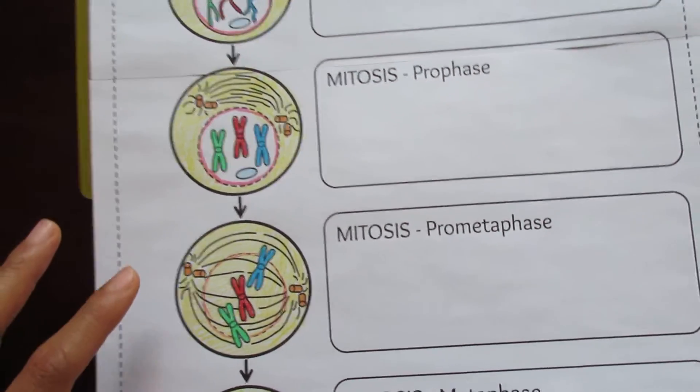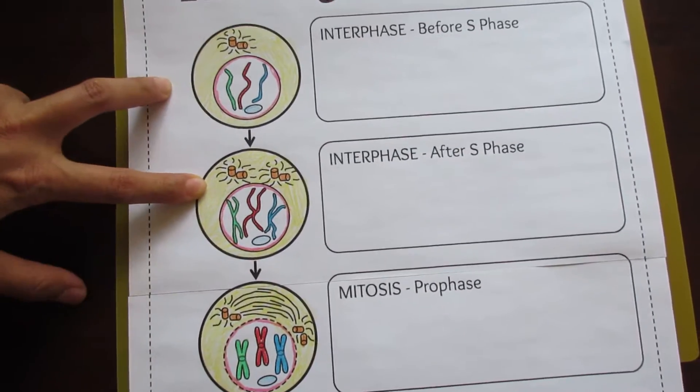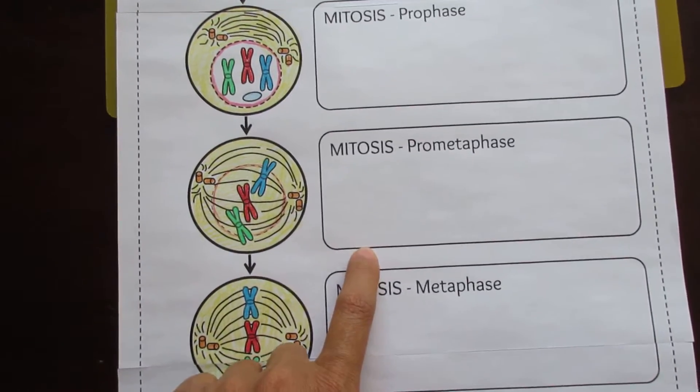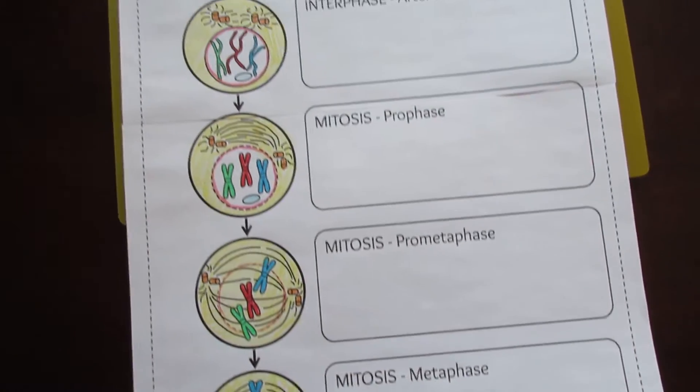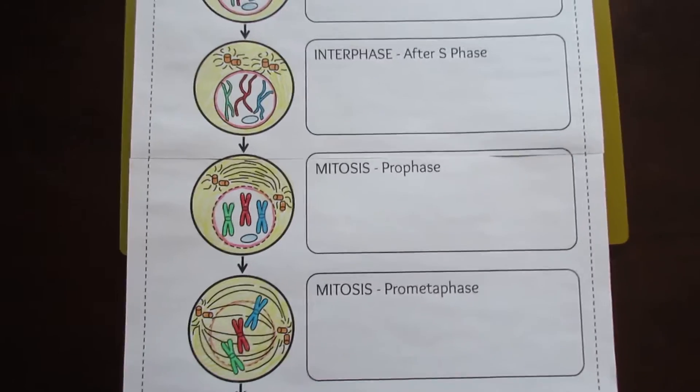I've provided another option that includes these two parts of interphase but without prometaphase, and the third option is I've included just the classic PMAT,